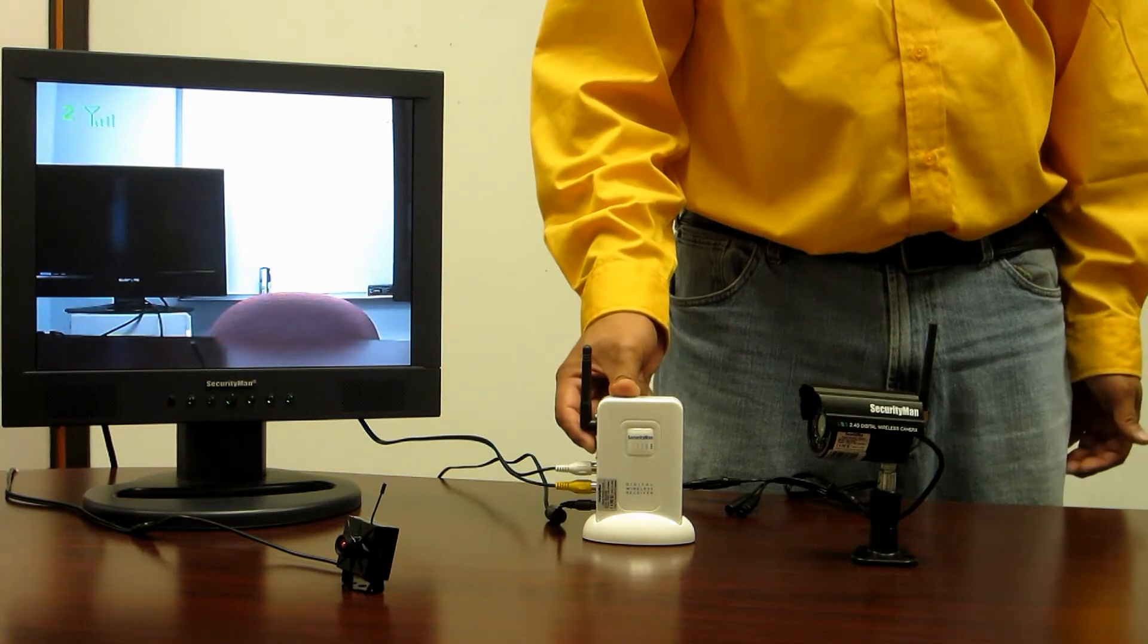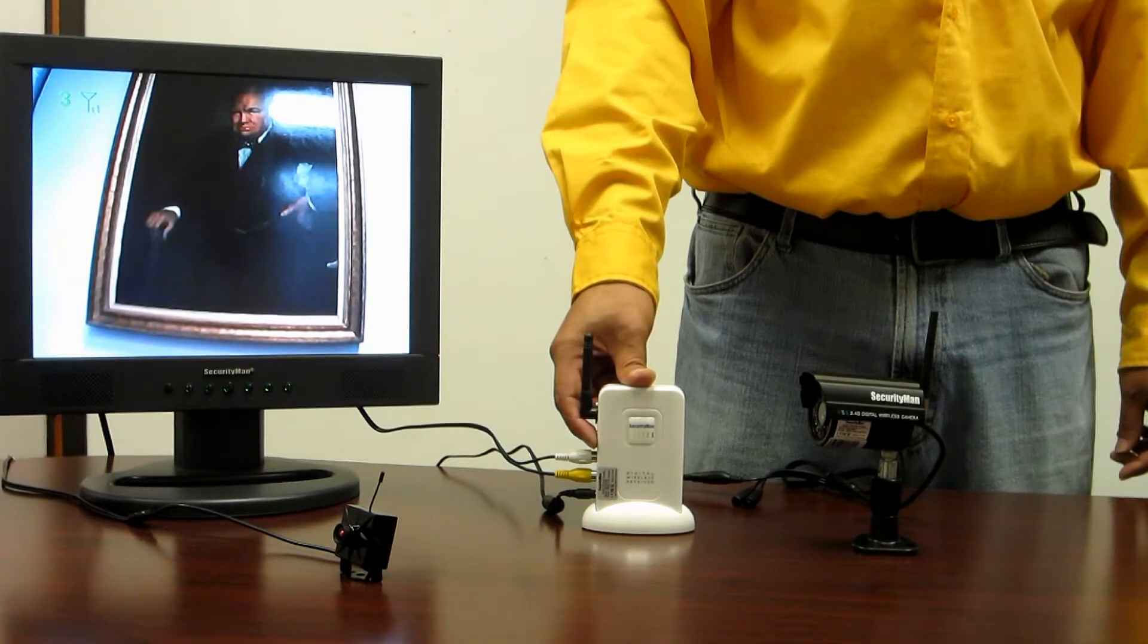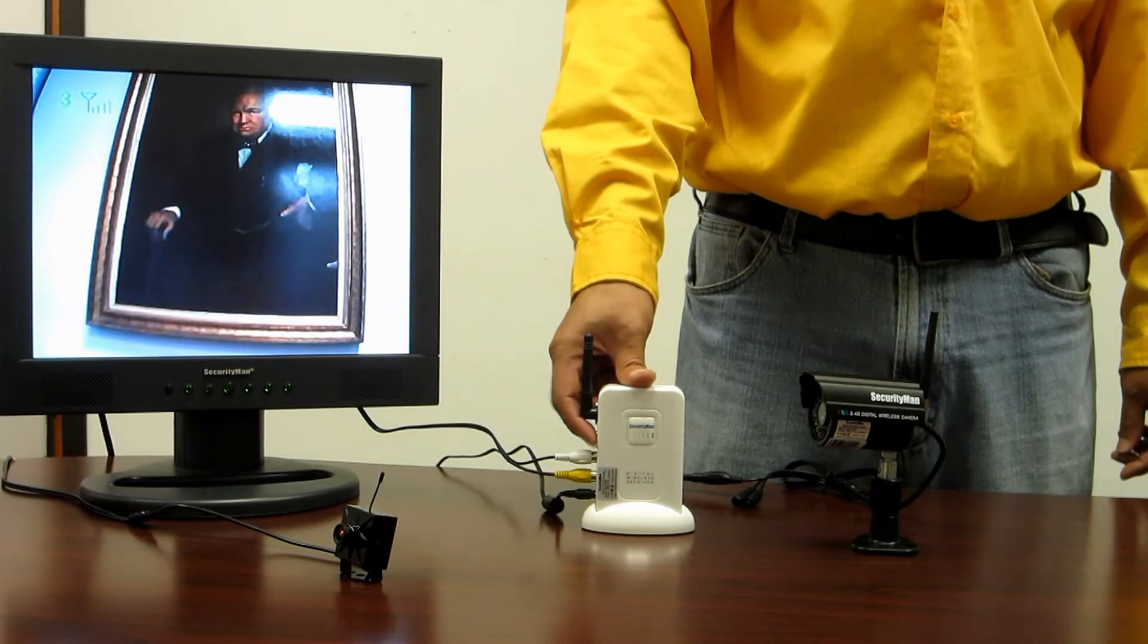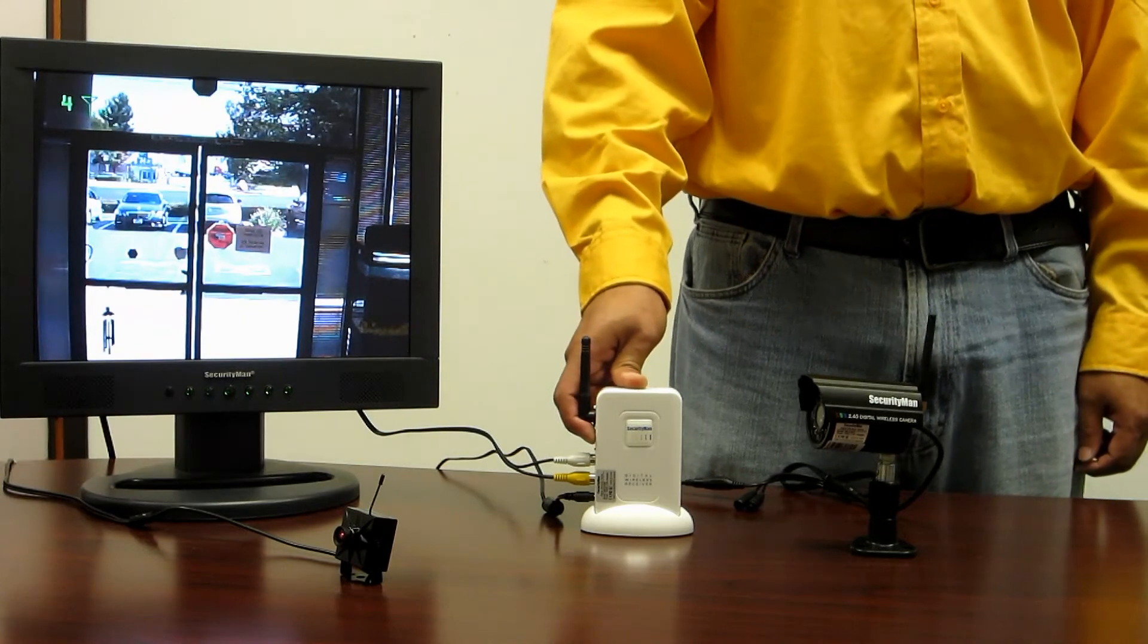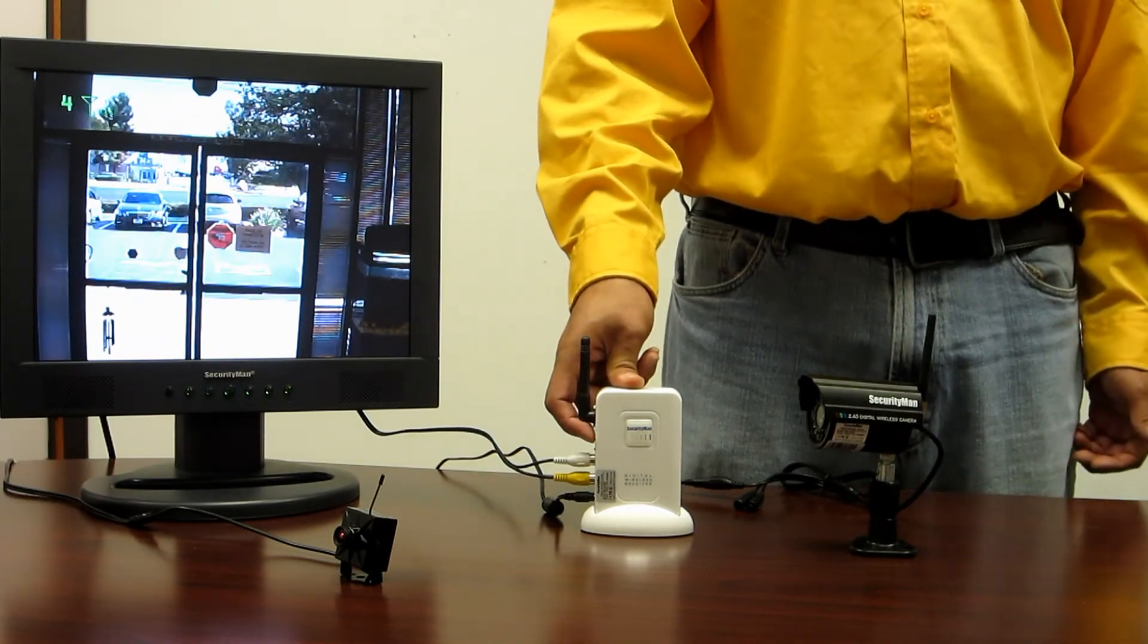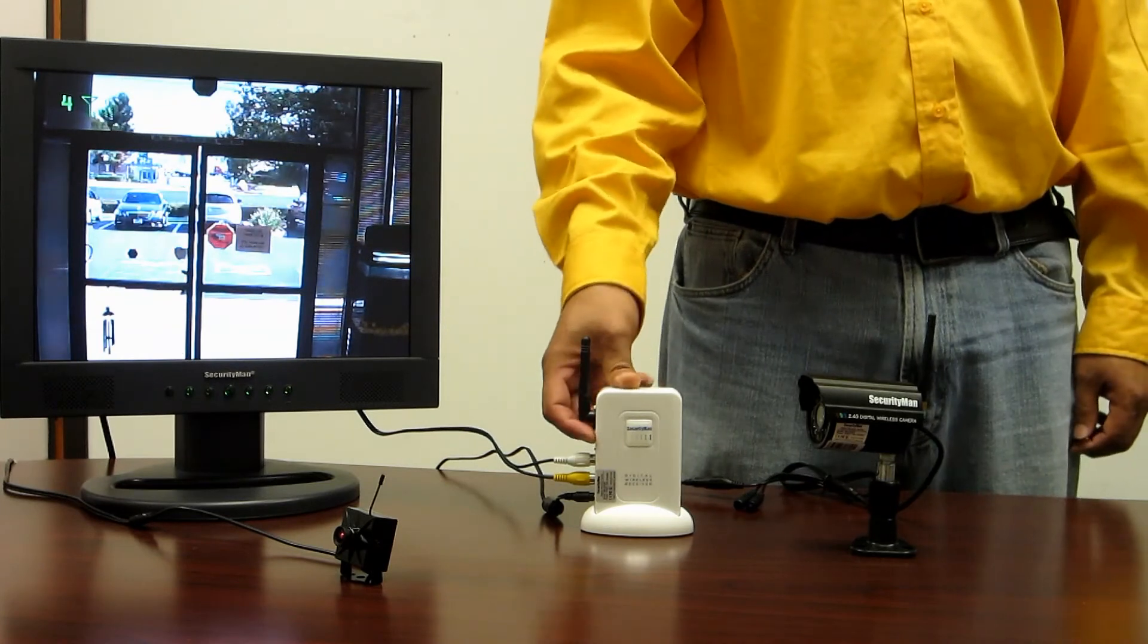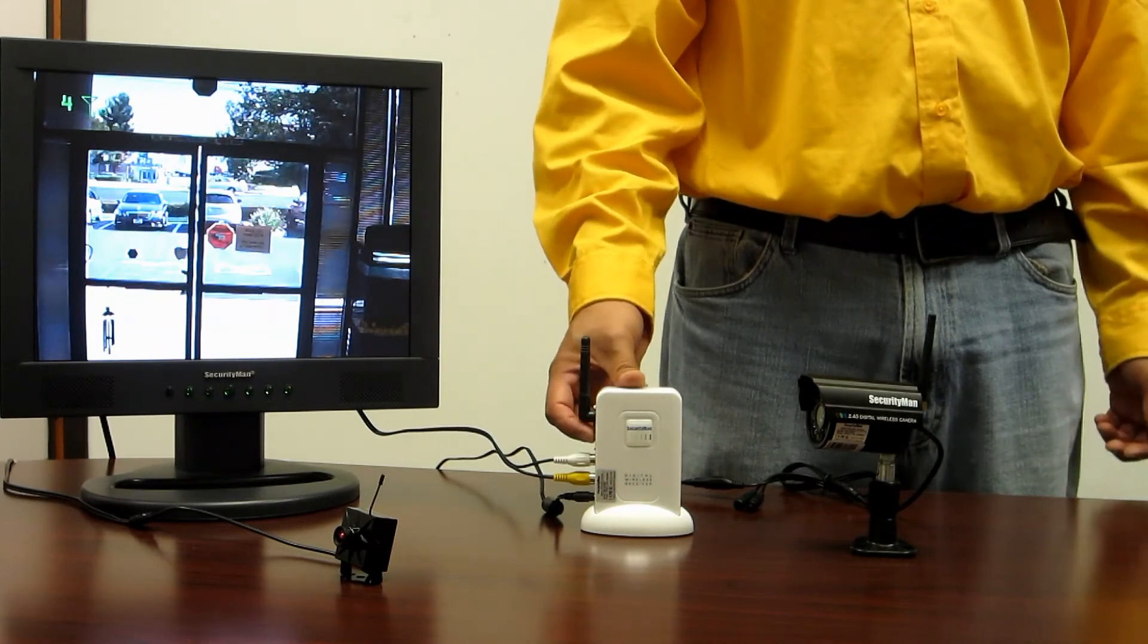Press it once more to get to channel three, and once more to get to channel four. After you've reached the fourth channel, you've completed the cycle on the receiver, so pressing it one more time will take you back to channel one.